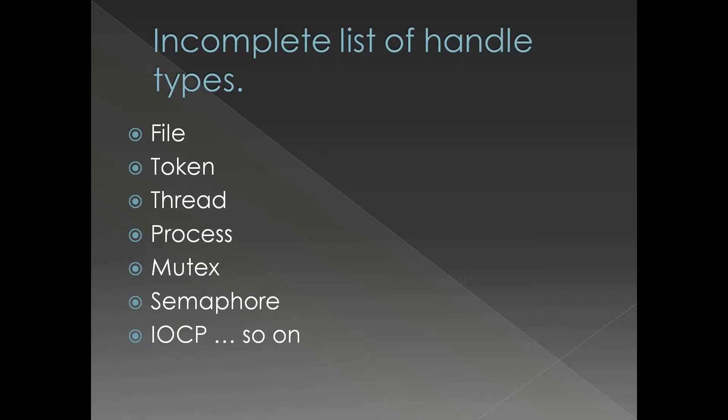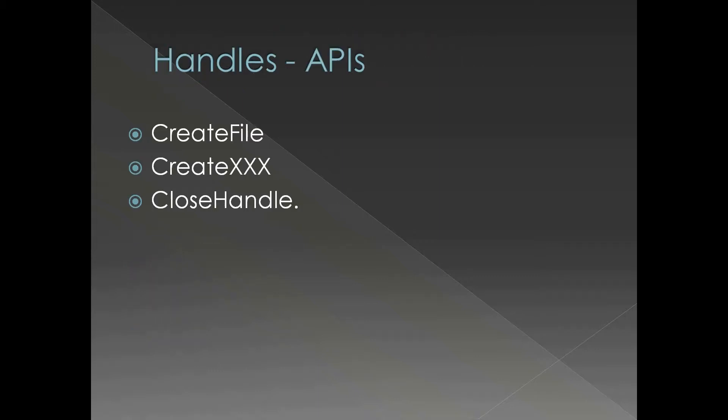Sometimes it is called the kernel object, sometimes it is called executive object. I have seen different terminologies, but one thing you have to understand is they are in the upper 2 GB and they are C structures. Handle APIs - so how do you get these handles?